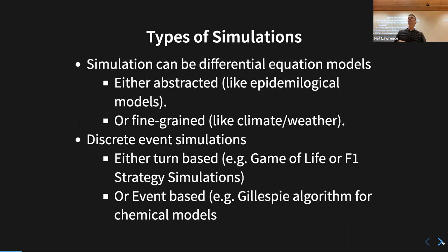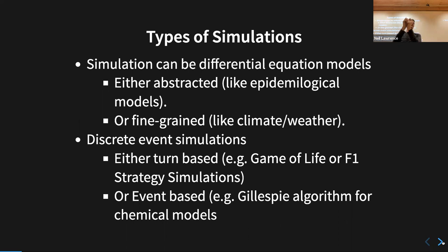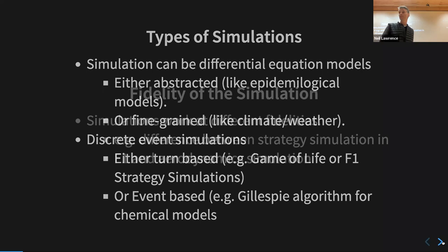Another type of discrete event simulation is the Gillespie algorithm, where instead of updating every timestep, you work out what the next event will be. It's used for discrete chemical combinations: you sample from an exponential distribution to determine the timing of the next chemical collision, jump forward in time to that event, look at its consequence, and then simulate when the next thing happens.